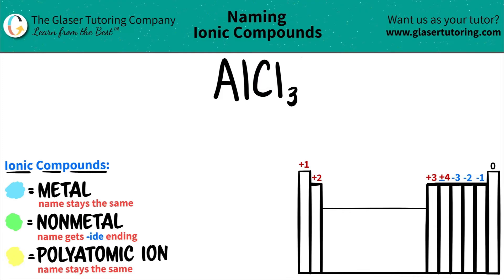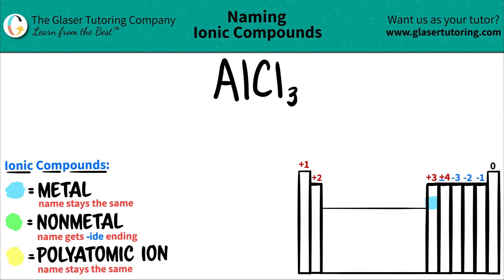Let's map where these guys are on the periodic table to determine what's a metal and what's a non-metal. So aluminum is over here on the periodic table. It's in this group right here, which is 3A or 13. Notice that aluminum, if you look on your periodic table, it's going to be to the left of this staircase line. Any elements basically to the left of the staircase are always metals except for hydrogen. So aluminum, since it's to the left of the staircase, it's going to be a metal, so it's in blue.